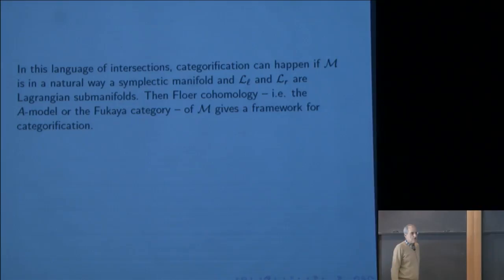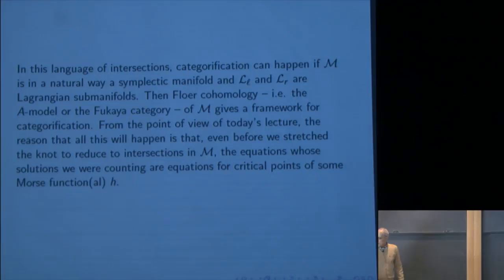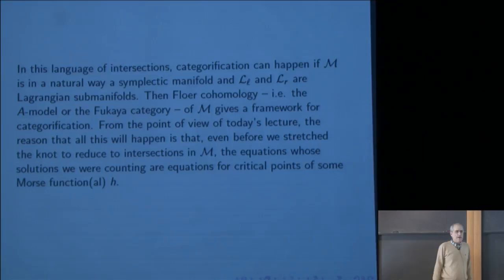The reason that all these facts will be true is that even before we stretch the knots to reduce to intersections in M, the equations whose solutions we're counting are equations for critical points of some Morse function. So we'll be in the situation Floer started with in his work back in the 80s in 3+1 and also 1+1 dimensions.